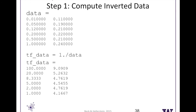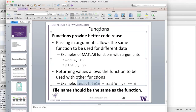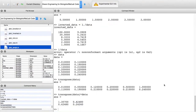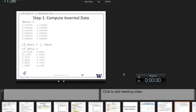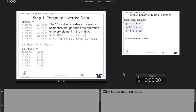The first step is to compute the inverted data using the dot operator in MATLAB, which allows us to do a computation on each element in a matrix. With matrix multiplication, A times B multiplies matrices together, while A dot-times B is term by term. We need to compute these inverted values to set up the linear regression.